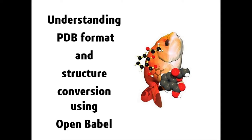Hello everyone, welcome to my tutorial. In the last few videos I explained how to download protein structures and chemical compound structures from different databases — protein structures from the Protein Data Bank, and chemical compound structures from different chemical databases. These structures are available in different file formats like PDB format, SDF, MOL, MOL2, or several other formats.